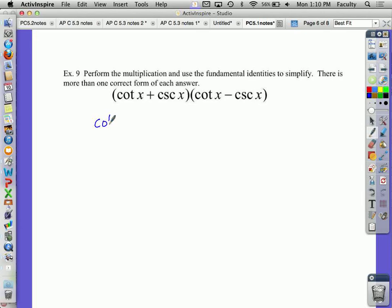So I would get cotangent squared x. Now the outer and the inner would cancel, and I would get minus cosecant squared x. Now, a Pythagorean identity is jumping out at me. 1 plus cotangent squared x equals cosecant squared x. So what I'm going to do is I'm going to substitute for cosecant squared 1 plus cotangent squared x.